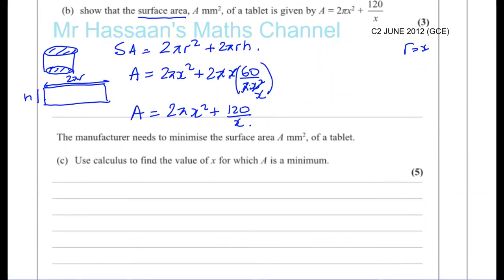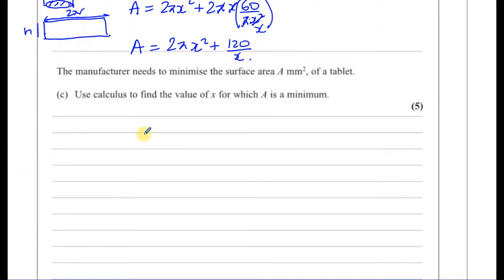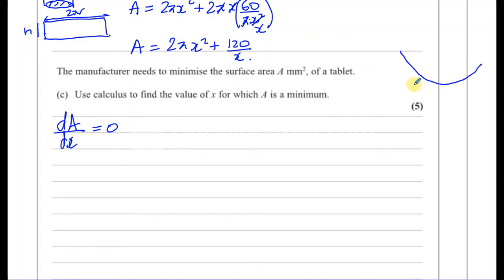Part C: the manufacturer needs to minimize the surface area A. Whenever you see minimum or maximum, it relates to the turning point of a curve — where the gradient is 0. So we find dA/dx and set it equal to 0. Writing A = 2πX² + 120X⁻¹ ready for differentiation, dA/dx = 4πX minus 120X⁻².